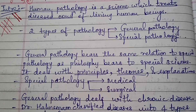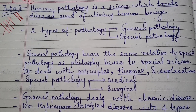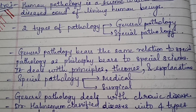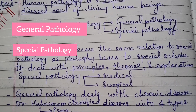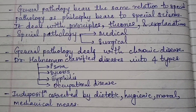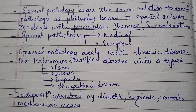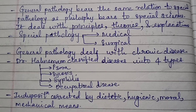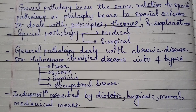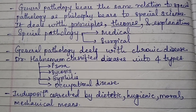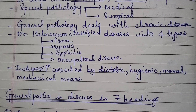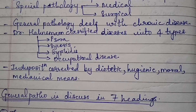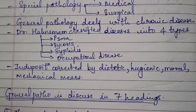Introduction: Human pathology is a science which treats disease conditions of living human beings. There are two types of pathology — general pathology and special pathology. General pathology bears the same relation to special pathology as philosophy bears to special science. It deals with principles, theories, and explanations. Special pathology includes medical and surgical. General pathology deals with chronic disease.